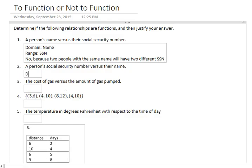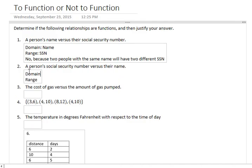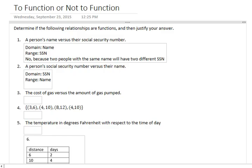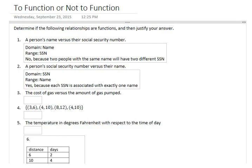However, if we look at it the other way, a person's social security number versus their name, that means the domain is the social security number and the range is the name. Does one social security number go with one name? I believe the answer in this case would be yes. You can have multiple people with the same name, but they would all have distinct social security numbers. Yes, because each social security number is associated with exactly one name.